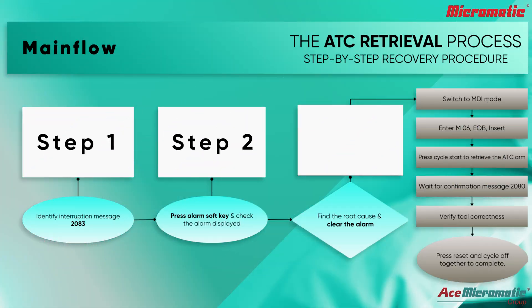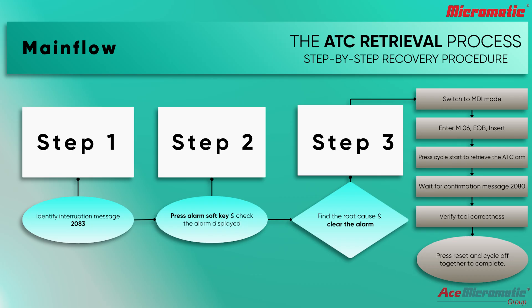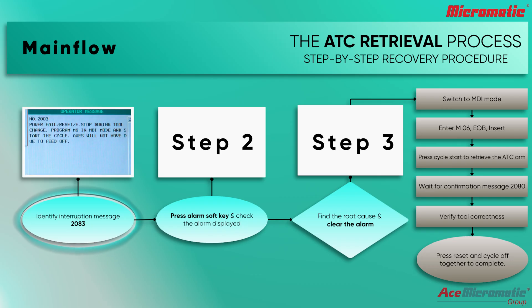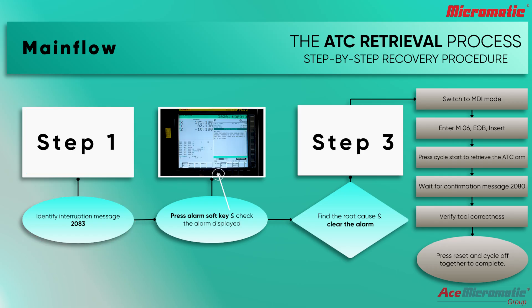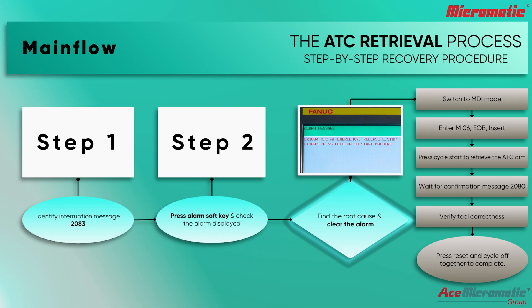Here is a simple flowchart of the ATC retrieval process. Step 1: identify interruption message 2083, then press the alarm softkey — the alarm will be displayed. Find the root cause for the alarm and clear it. Once the alarms are cleared, the following is the common recovery process.